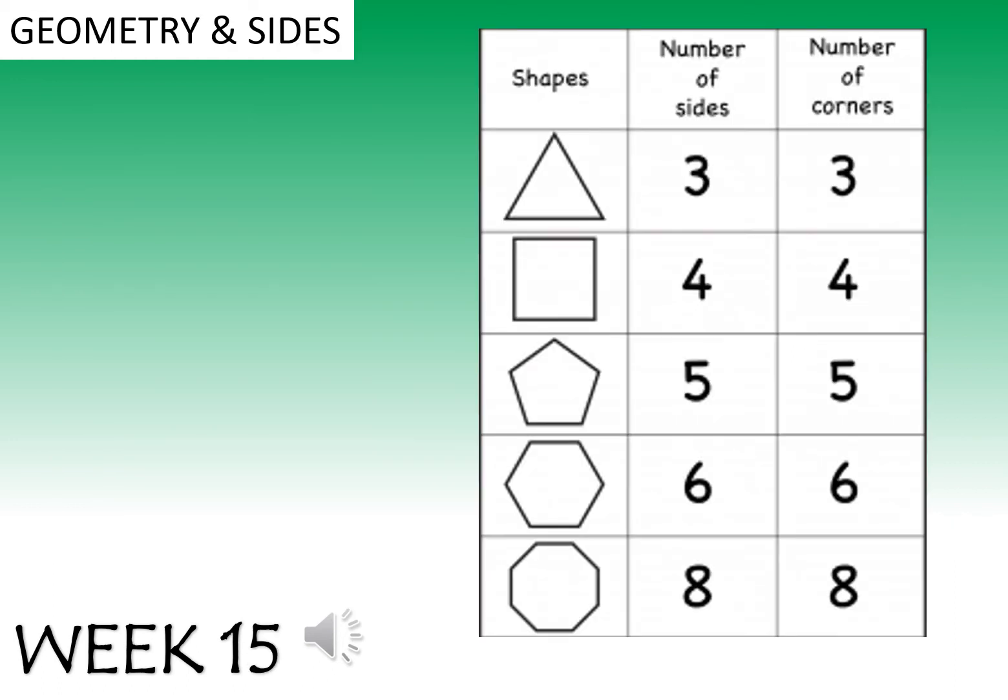Geometry and sides. Triangle has 3 sides. Square has 4 sides. Pentagon has 5 sides. Hexagon has 6 sides. And an octagon has 8 sides.